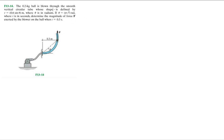A 0.2 kg ball is blown through a smooth vertical circular tube whose shape is defined by a given equation. We're in the cylindrical coordinate system now — equations of motion, force and acceleration, but in cylindrical coordinates. They give us the radius or position of the particle, r = 0.6 sine θ.